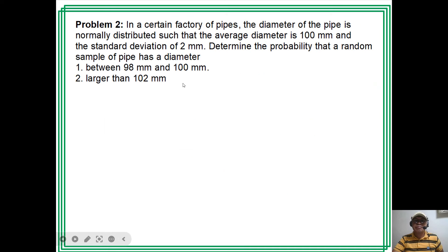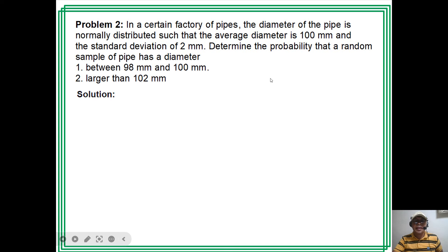Problem 2. In a certain factory of pipes, the diameter of the pipe is normally distributed such that the average diameter is 100 mm and the standard deviation is 2 mm. Determine the probability that a random sample of pipe has a diameter: (1) between 98 mm and 100 mm, and (2) larger than 102 mm.